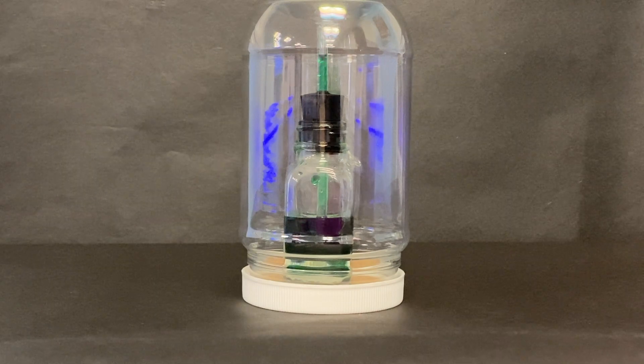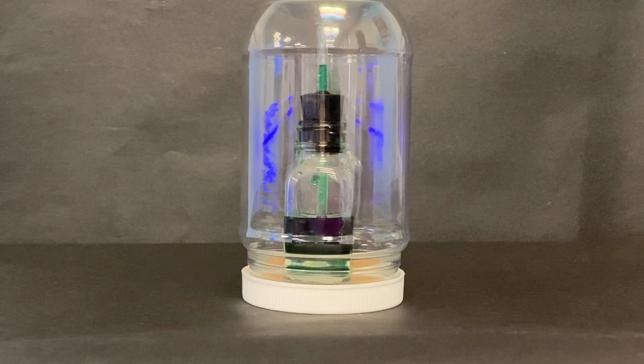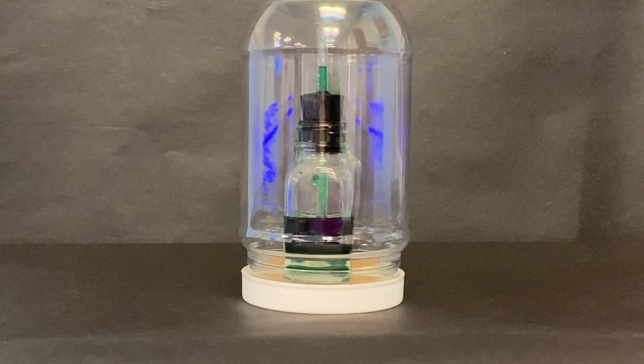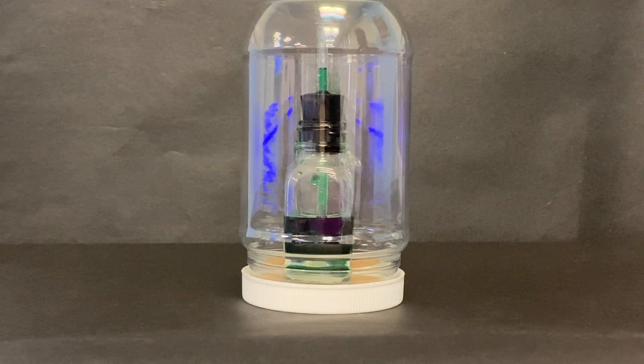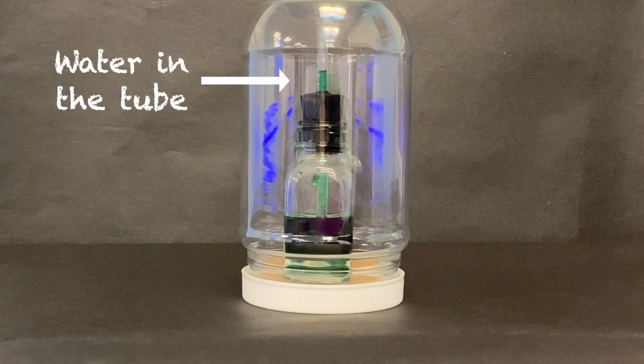I have a plastic jar that is tightly closed. Inside is a glass bottle half filled with green water. A stopper with a clear plastic tube running through it is tightly pushed into the glass bottle and you can see the water level in the tube.